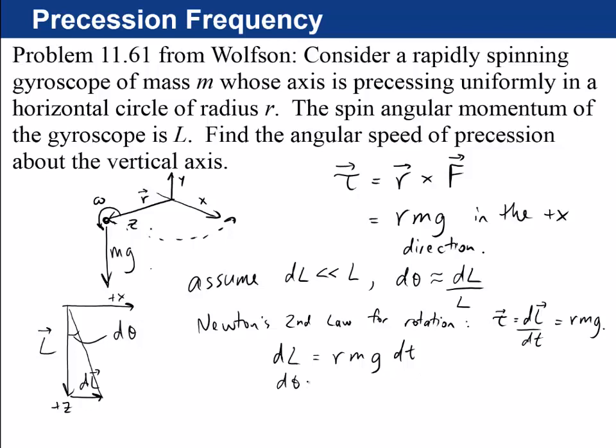Okay, and now plugging that in to our small angle approximation above, we can get d theta is this dl divided by l. So then, dividing by dt again, you get d theta by dt. We're going to call that this precession, angular speed of precession, which is what we're trying to find here, is just r times m times g divided by l. So that can be called the angular speed of precession. I also call it the angular frequency in radians per second of this precession as it goes around capital omega.